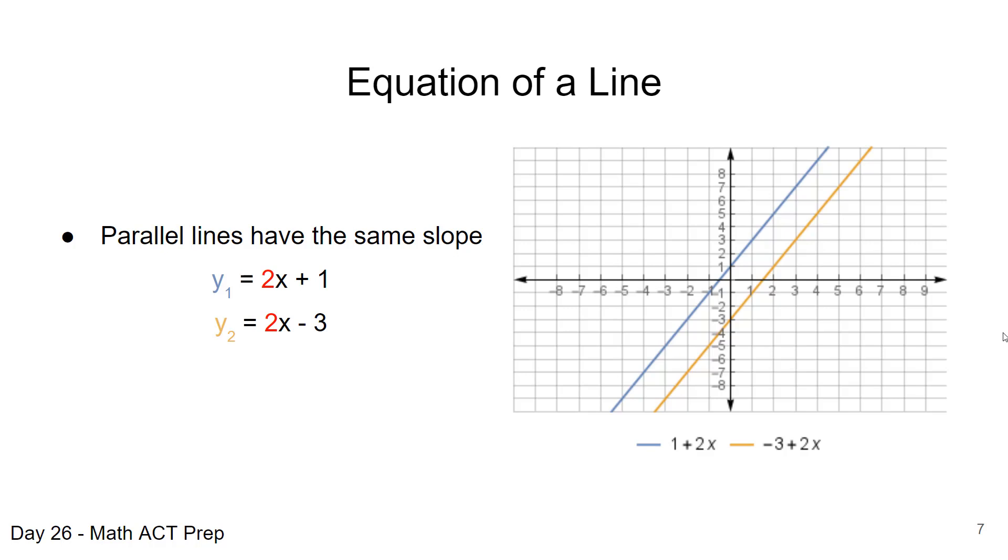The yellow line should cross at negative 3 because our value for b is negative 3. So we see that in our graph that the yellow line crosses at the point 0, negative 3. So parallel lines have the same slope.